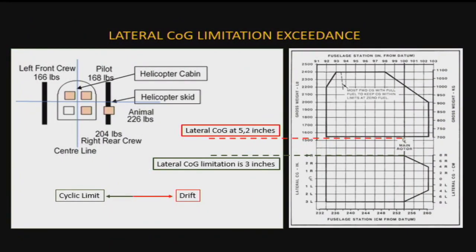Here you can see the left front weight, the right front weight, the pilot's weight in the back, and then the animal on the right-hand skid. It's important to note that your cyclic limitations are based on the amount of lateral CG that you can handle.